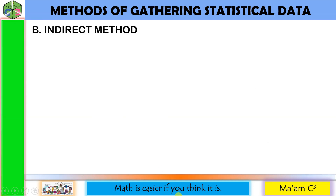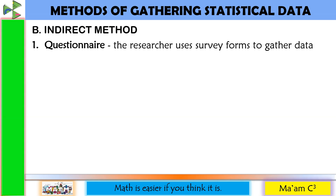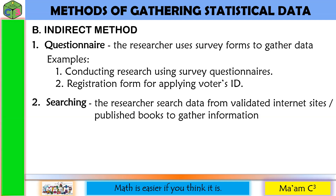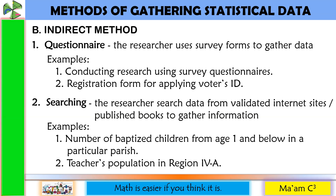Another method is the indirect method. You can also do this in two ways. One is through questionnaire, where the researcher uses survey forms to gather data — for example, conducting research using survey questionnaires, or a registration form for applying for a voter's ID. Another way is through searching, where the researcher searches data from validated internet sites or published books — for example, finding the number of baptized children from age 1 and below in a particular parish by visiting the parish office, or looking up teacher's population in Region 4A from a validated internet site.